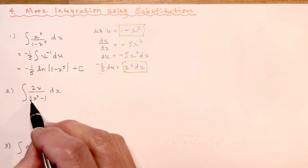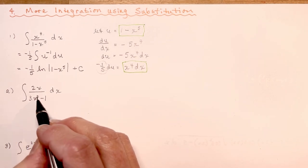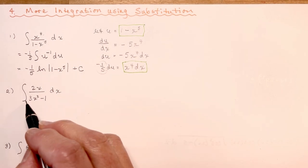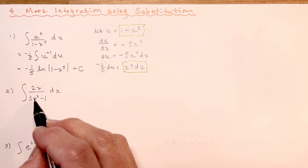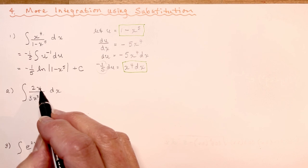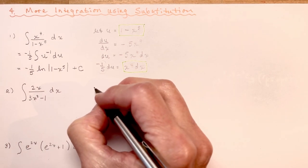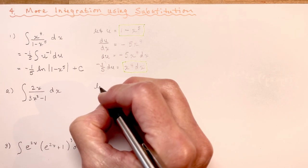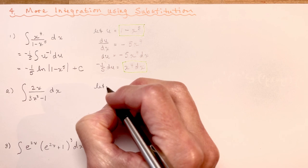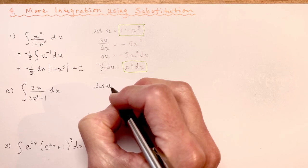In this one, obviously 3x squared — the derivative of that would give me 6x, and I have 2x there. So that's a good one to choose. It's usually the more complicated expression you want to pick.